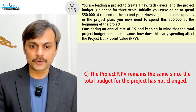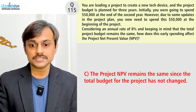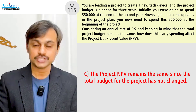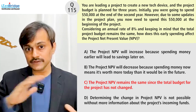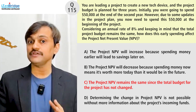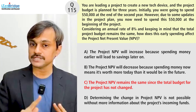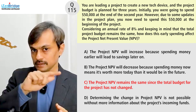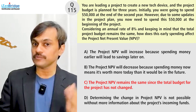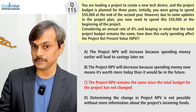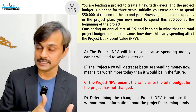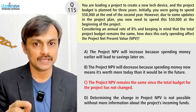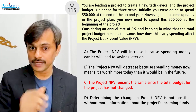Option C: the project net present value remains the same since the target budget for the project has not changed. As we said, even if the total sum is not changing, when we calculate net present value we are factoring the time value of money. Without factoring the time value of money, the dollar amount may not change. But if it is getting spent early, it is impacting the NPV calculation. So option C is not right.